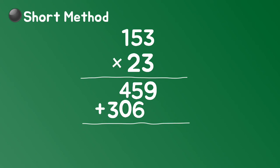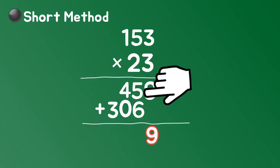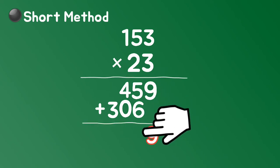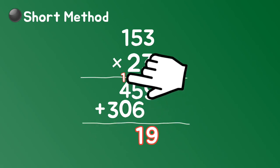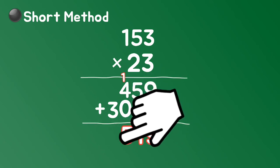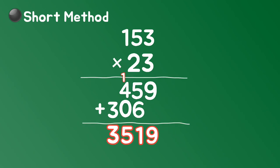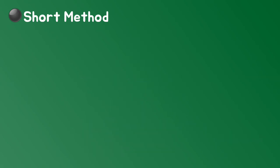Finally, add the partial products. Bring down 9. 5 plus 6 is 11 — regroup, bring down 1, carry 1. 4 plus 0 plus 1 is 5. Bring down 3. The final product is 3,519. 153 times 23 equals 3,519.